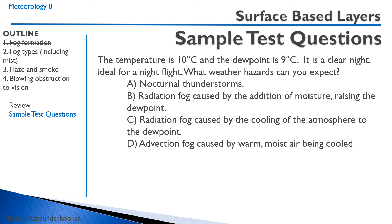Let's go through the answer choices. Nocturnal thunderstorms — that's not the greatest hazard here. Radiation fog caused by the addition of moisture — no, there's no addition of moisture. Radiation fog caused by the cooling of the atmosphere to the dew point — that's the correct answer. Advection fog — no, that's what happens over maritime regions with strong winds.